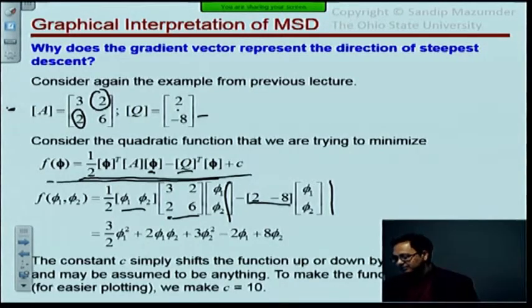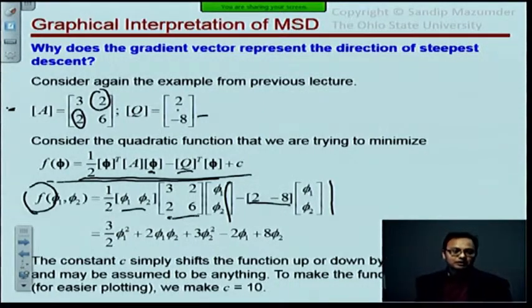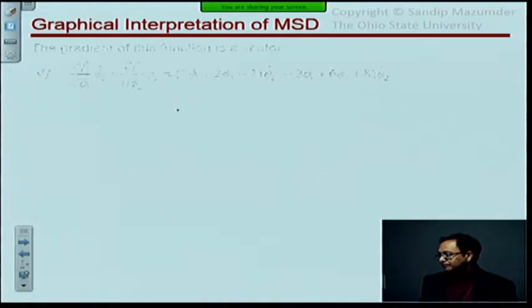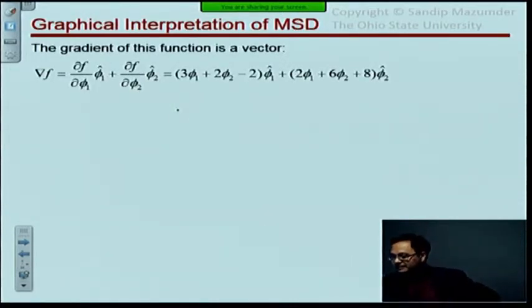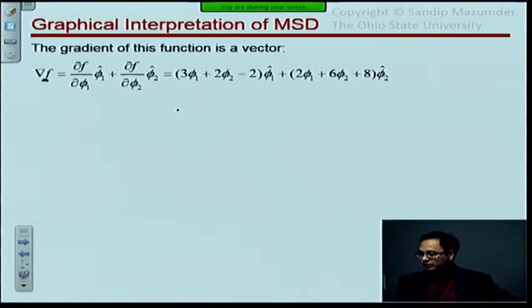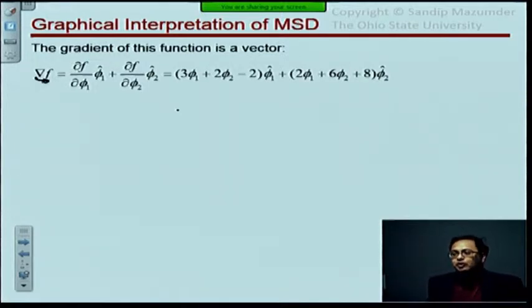So what is the gradient? Here is the definition of a gradient. If f is a scalar, which is a function of two unknowns phi_1 and phi_2, the gradient operator basically takes the two independent coordinates and then you take the partial derivative and then the unit vector in that direction.